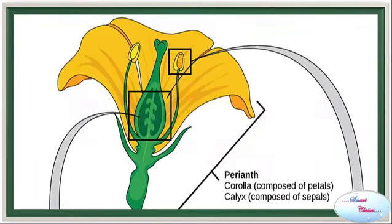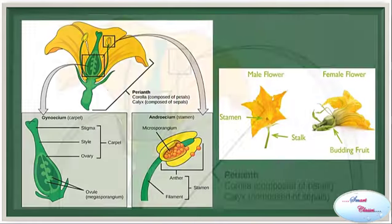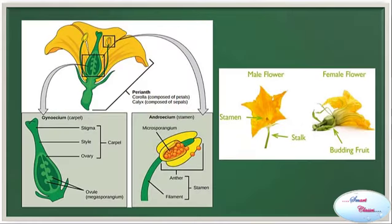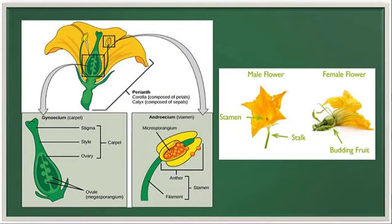The flowers may have either the male part or the female part, or both the male and female part. The female part of a plant is the carpel and the male part is the stamen. The female part, which is the carpel, consists of stigma, style and ovary. It also has ovule.